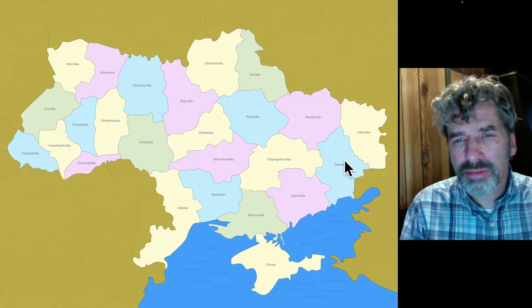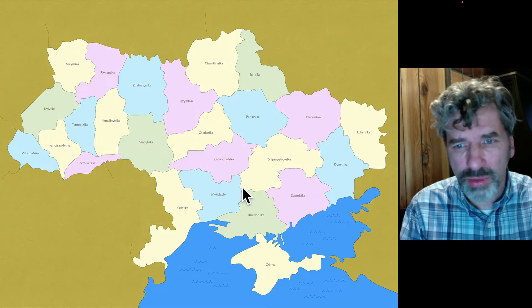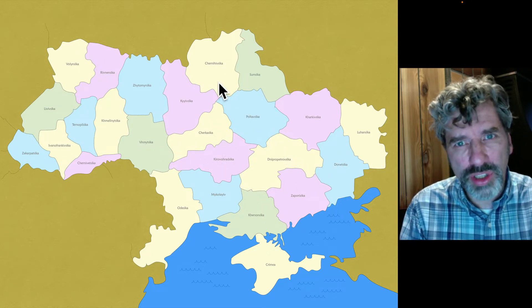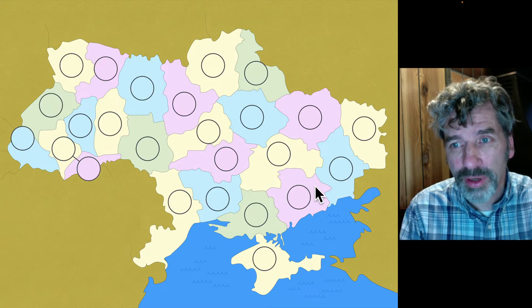We're going to look at a map of Ukraine. And to make it simpler, you can see that this map is quite difficult to work with. So to make it simpler, we're going to put circles in every single one of these Ukrainian regions.